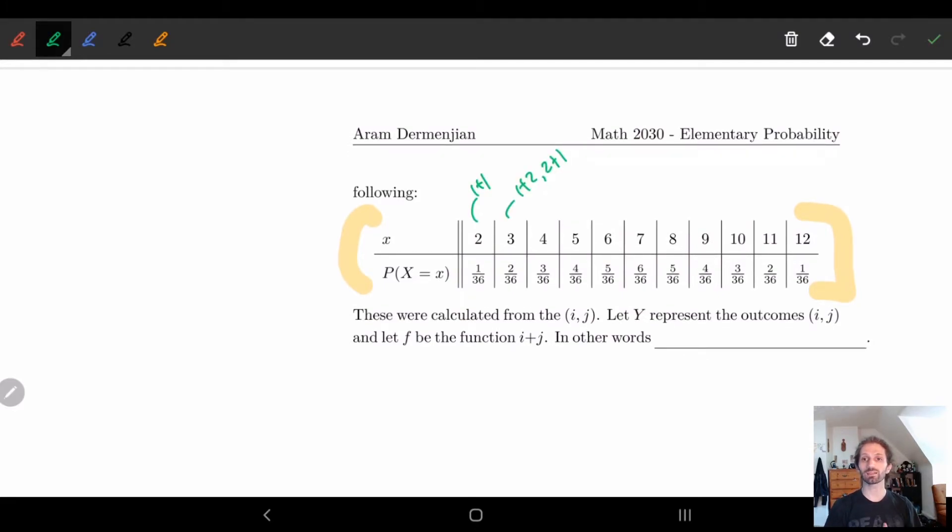So what we can do is we can let Y represent the outcomes ij, right? So we let Y be ij, and we can let f be the function i plus j. So what we're really saying is here, f of Y equals f of ij equals i plus j, which is just our X. So in other words, f of Y equals X is what we're saying.